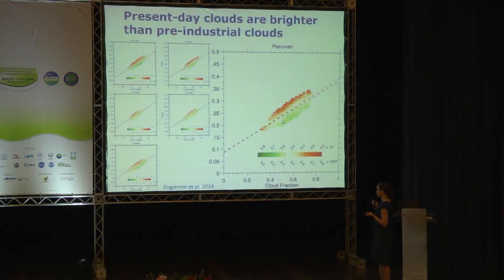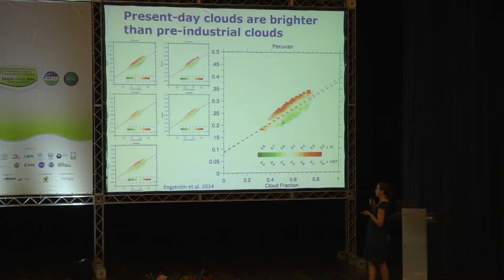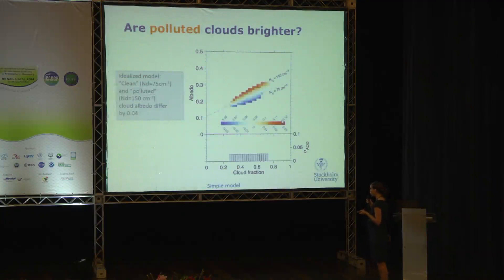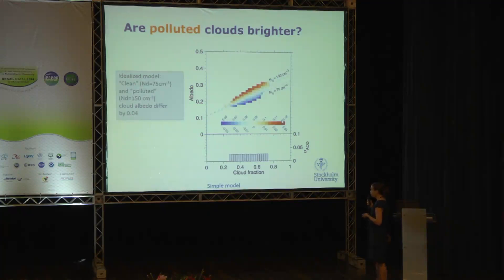We can't test this in observations since we don't have pre-industrial observations, but what we can do is look for the same type of pattern on shorter time scales — using only present-day climate conditions and comparing clean and polluted cases. If polluted clouds are consistently brighter than clean clouds, we should be able to see a pattern in albedo-cloud-fraction space when we segregate points by their aerosol loading.